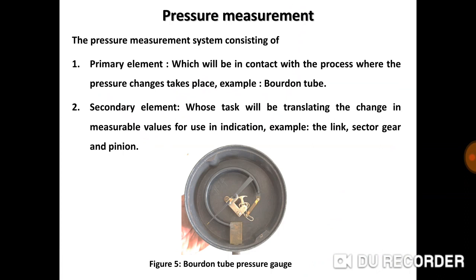Pressure measurement. The pressure measurement system consists of primary element and secondary element. From the Bourdon tube pressure gauge as an example, the primary element is Bourdon tube pressure gauge which will be in contact with the process where the pressure change takes place. However, the link, sector gear, and pinion of Bourdon tube pressure gauge acts as secondary element. The secondary element's task is translating the change in measurable values for use in indication.